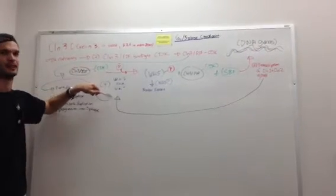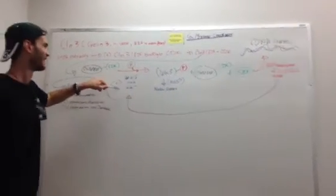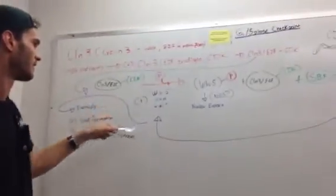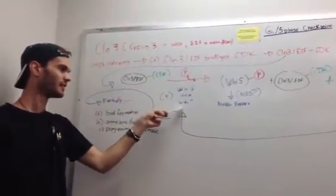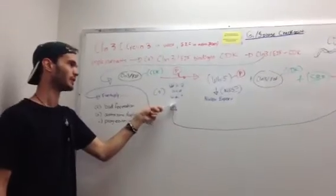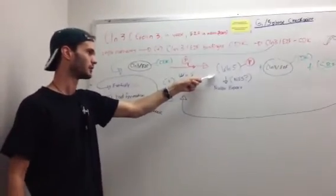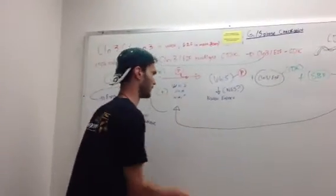The substrate of these complexes is a molecule called wifi — that's what we're calling it. The CDK complex phosphorylates wifi. So let's just call it wifi.